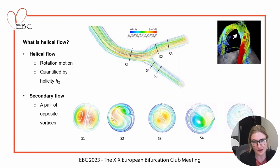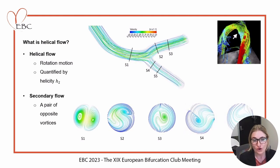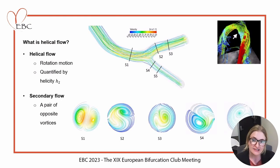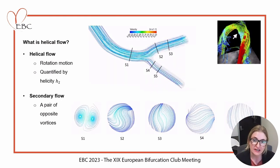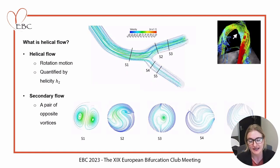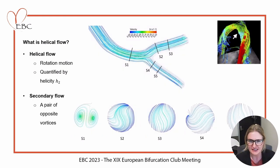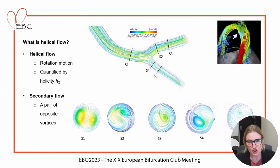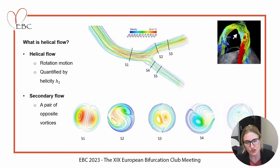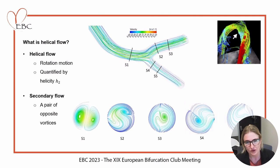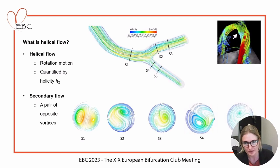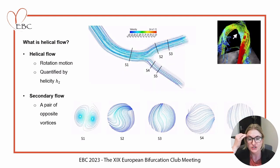Helical flow can be quantified by helicity or helicity intensity, also marked as H2. Here we can see the streamlines of a patient-specific coronary left main as the flow passes through the cardiac cycle, with certain cross-sections showing a rotation motion happening within the blood flow. The more curved the vessel is, the more we get this rotation motion.